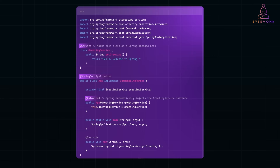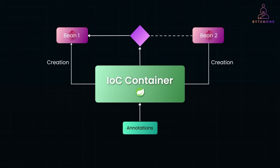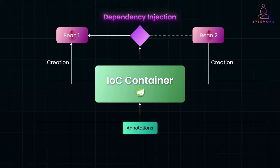Annotations are like special markers we put on our code, like @Service, to give instructions to the Spring framework. In this case, @Service tells Spring: this class is doing service-related tasks, so please manage and create it automatically. Spring then takes care of creating an instance of that class for you, so you don't have to write extra code. This approach is called dependency injection. It keeps your code super clean and modular because all those behind-the-scenes details, like how objects are created, are handled by Spring. You end up with a setup that's easier to maintain and test, without worrying about too much configuration or boilerplate.